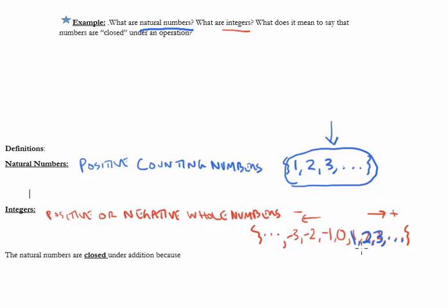Now we want to ask ourselves: what does it mean to say that a certain kind of number is closed under an operation? Let's just look at this question. The natural numbers are closed under addition because—